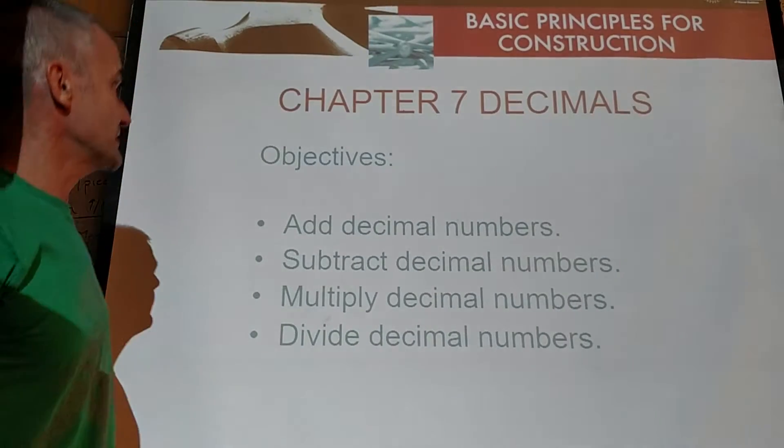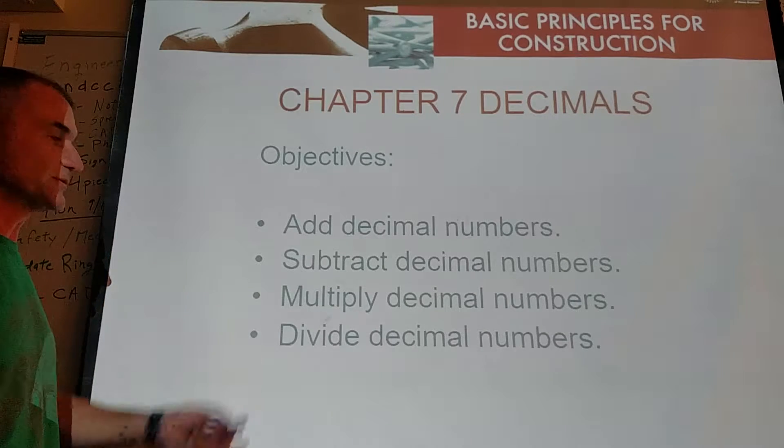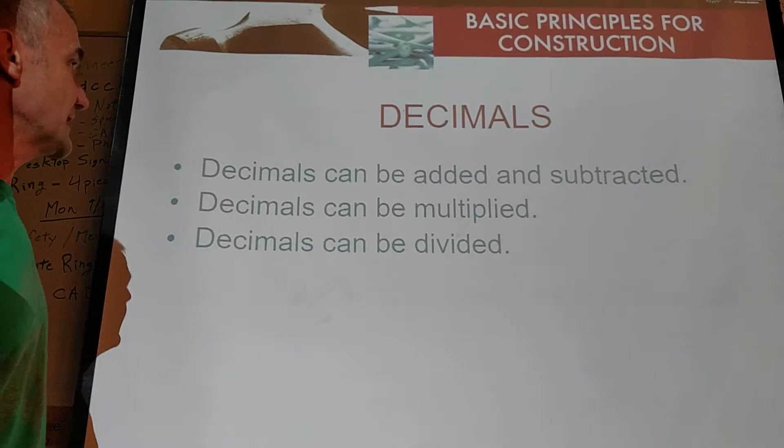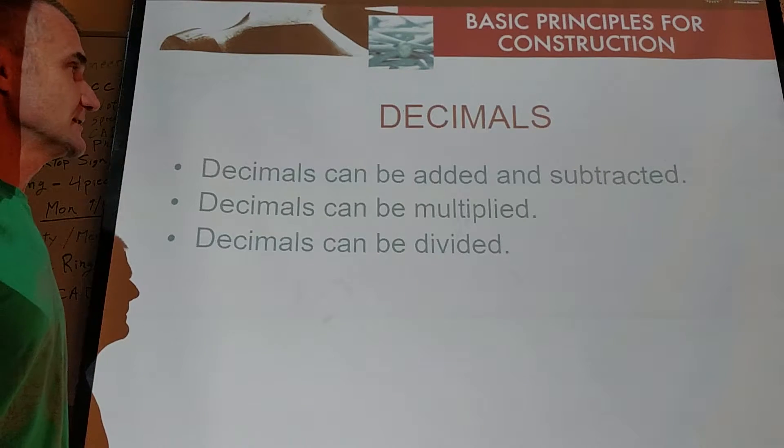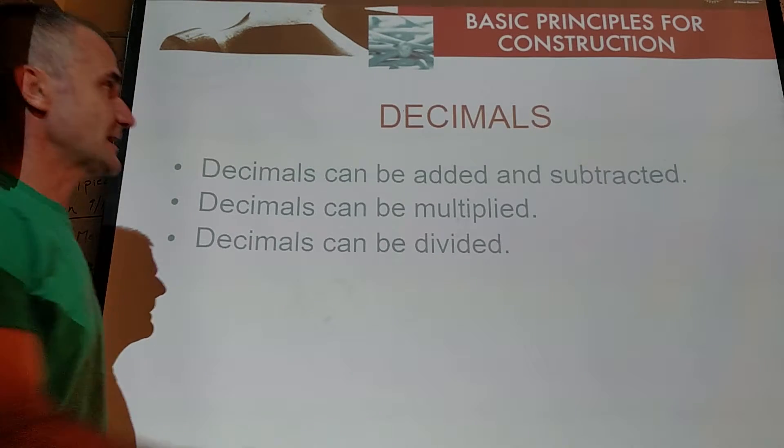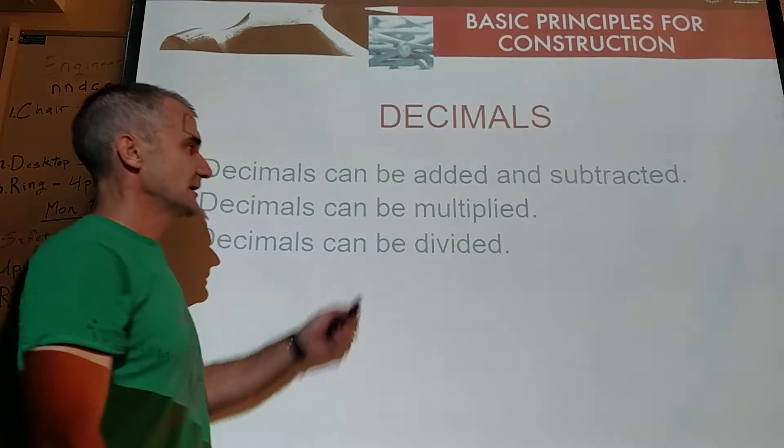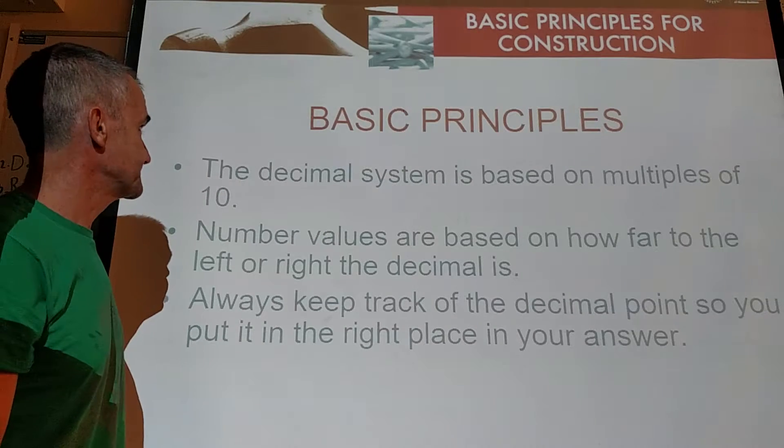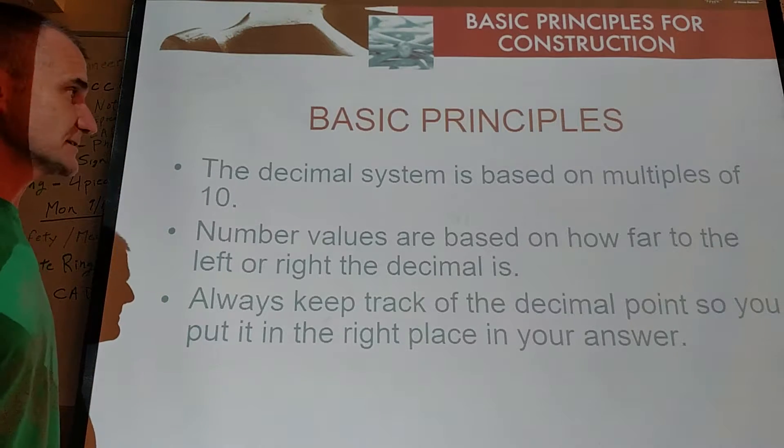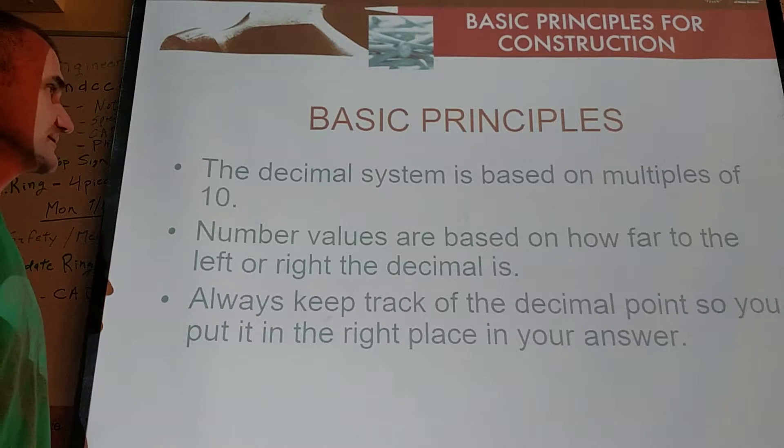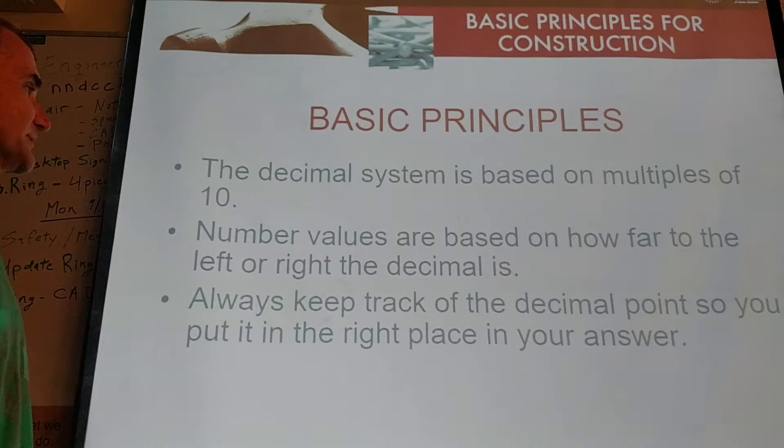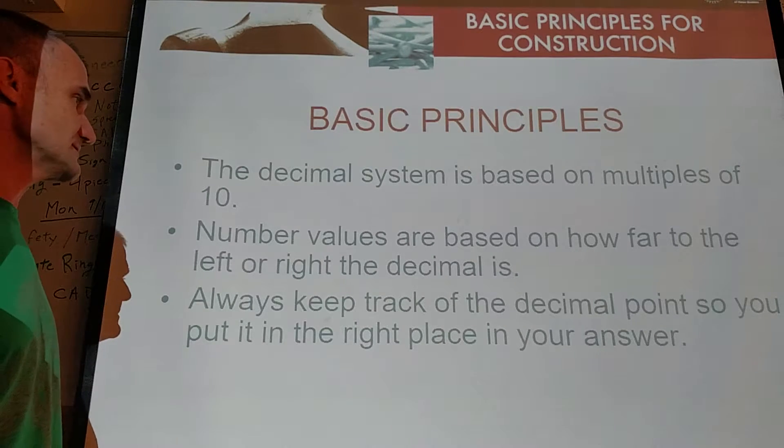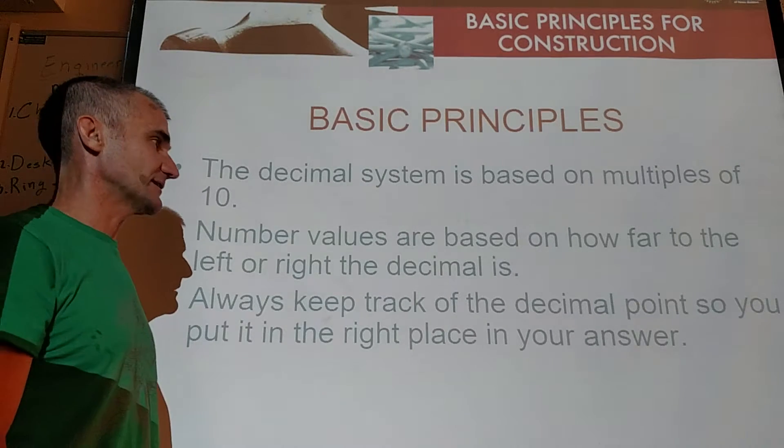Chapter 7 objectives are to be able to add and subtract decimals, multiply and divide them. Decimals can be added, subtracted, multiplied and divided. The key with adding and subtracting is you line up the decimal point, and multiplying and division, you keep track of the decimal point. The decimal system is all based on numbers of 10, and the placement is how far away, how large or small the number is, is how far away from the decimal point it is.